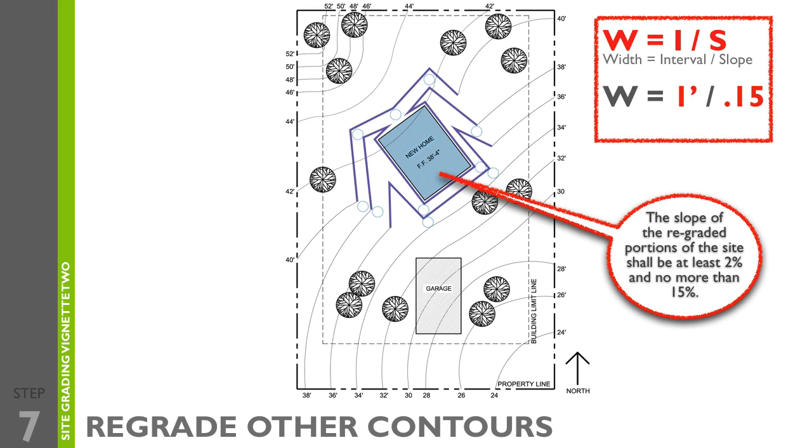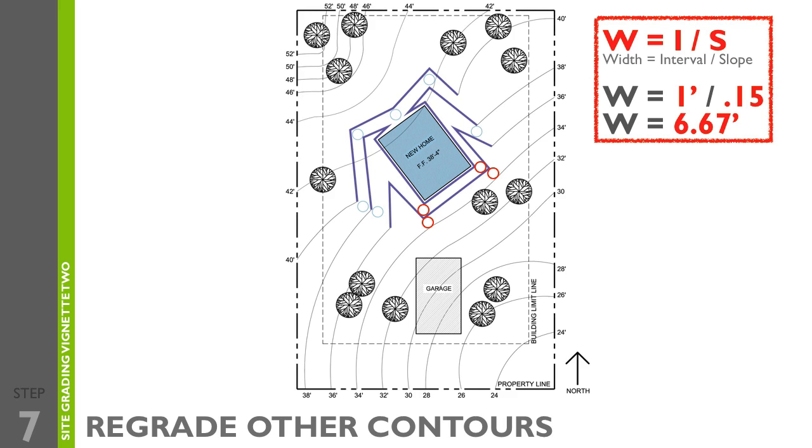Here, the contour interval is one foot and the maximum slope is 15% or .15 which equals 6.67 feet. Using sketch circles, make sure you space your contour lines a minimum of 6.67 feet apart. Otherwise, your slope would be greater than 15% which would exceed the program maximum because it would be too steep. You can also use sketch lines to stay within the minimum slope values using the same formula.